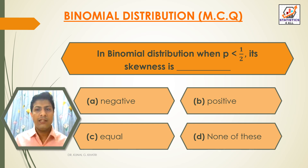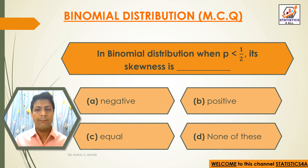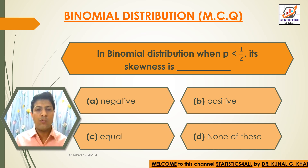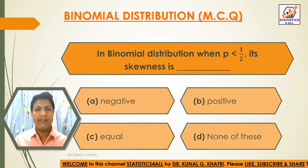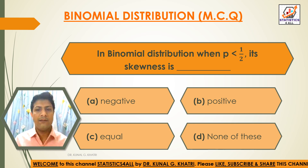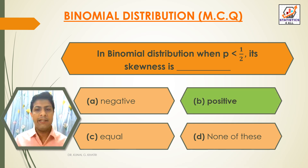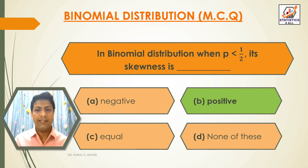Next question: In binomial distribution, when p is less than half, its skewness is dash. Option A: Negative. Option B: Positive. Option C: Equal. Option D: None of these. The answer is option B — Positive. In binomial distribution, when p is less than half, its skewness is positive.